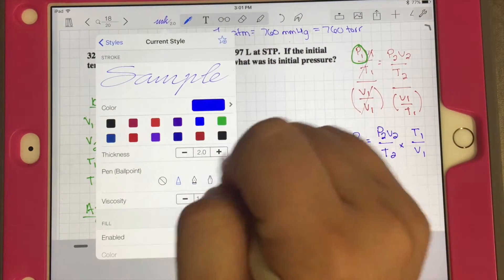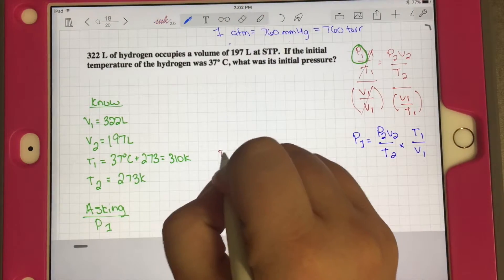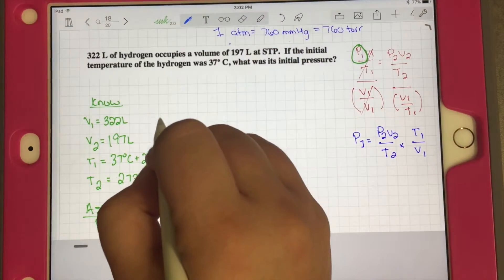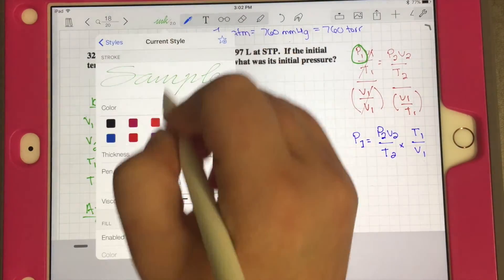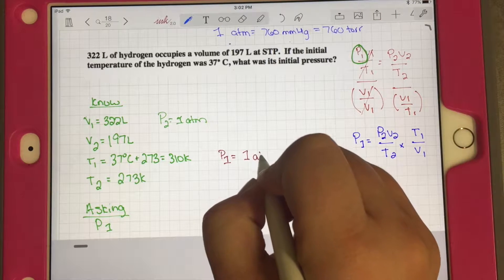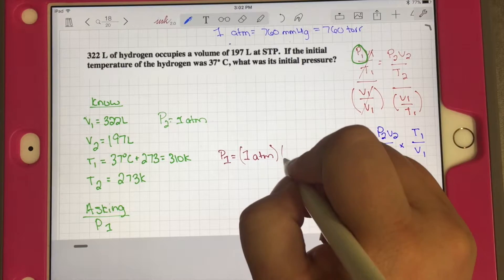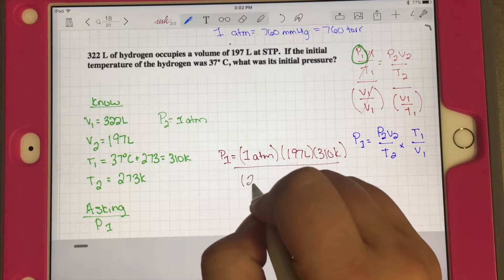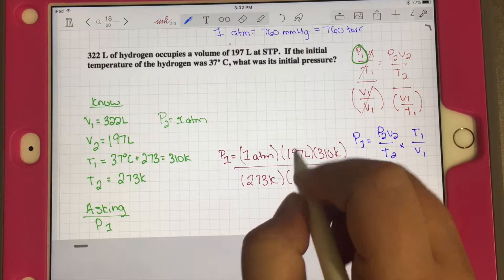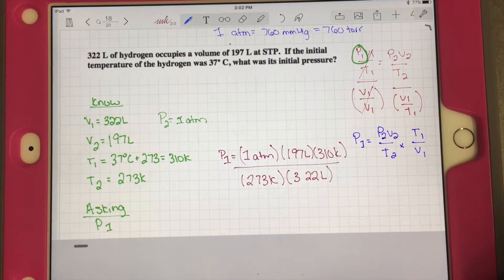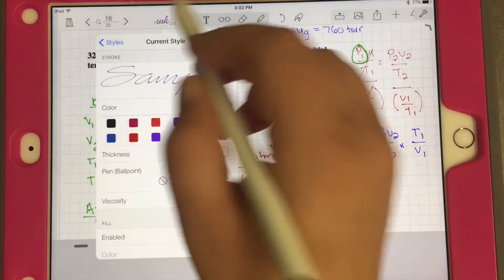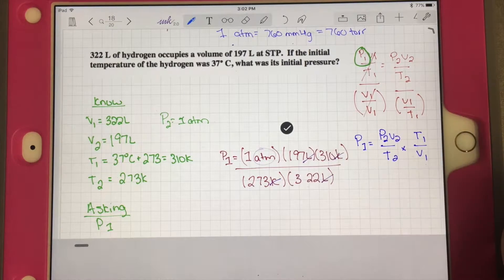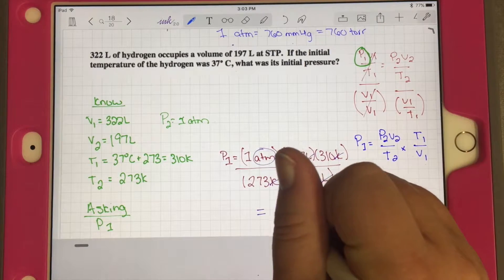P1 equals... Oh, I never wrote P2. P2 equals 1 ATM because we're at standard temperature and pressure. P1 is 1 ATM times 197 liters times 310 Kelvin divided by T2 273 Kelvin and 322 liters. Our units cancel: liters, liters, Kelvin, Kelvin. We want to get ATM, and that's what we're going to be left with. So our answer should be about 0.69 ATM.